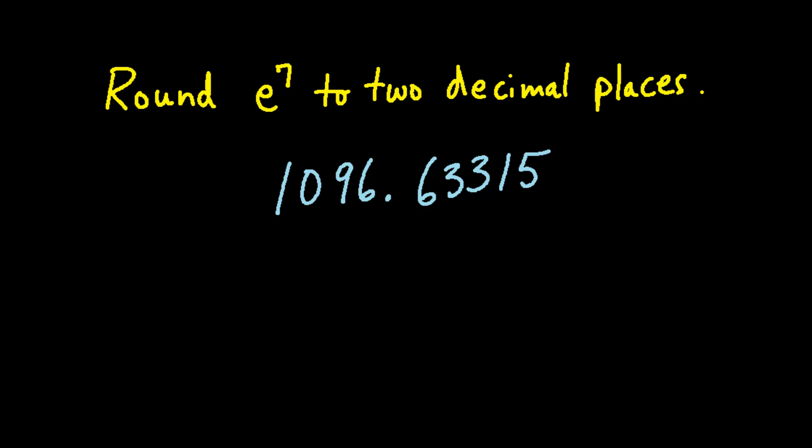This problem wants us to round to the nearest hundredths since we need to round to two decimal places. We need to look at this number to decide whether we need to round up or stay the same. Since this number is a 3 it is less than 5, so we will keep the 3 in front of it the same. So the final answer is 1096.63.